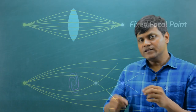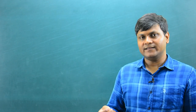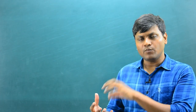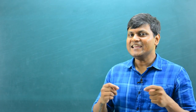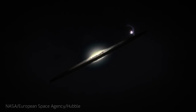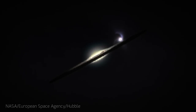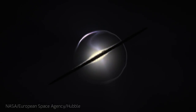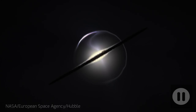Gravitational lenses may be thought of as having a focal line. This difference, along with the fact that the gravitational lens is a galactic cluster which creates a blind spot, leads to very interesting images. In this animation, a galaxy acting as a gravitational lens has a far away galaxy traveling behind it, and you can see the smearing or distortion of the light from the far away object.